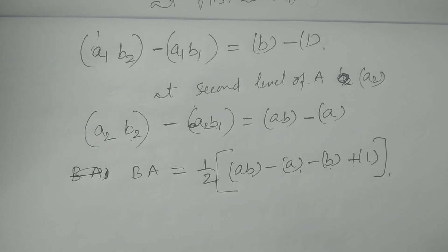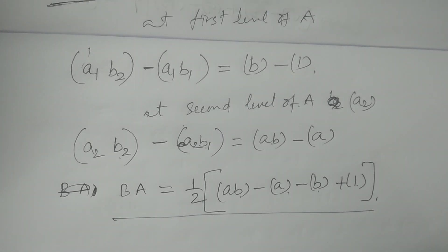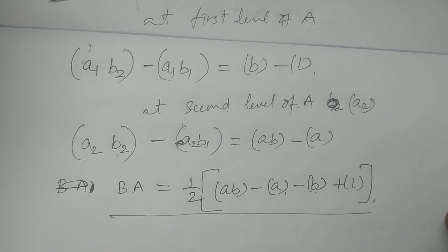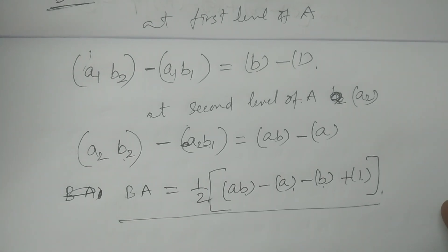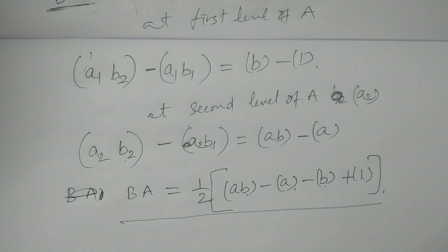The interaction effect between A and B, and B and A, are both the same. We need to learn all these formulas by heart. This is crucial for the two-square factorial experimental design. The interaction effect is very easy. Hope you understand. Thank you so much.